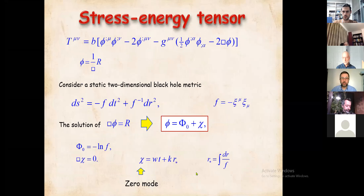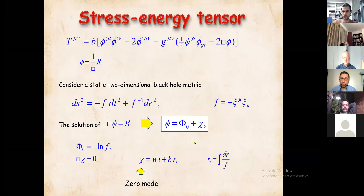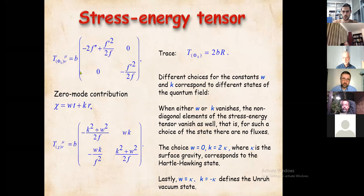The stress-energy tensor in the pure local theory looks like this, and for a static background with a Killing vector we can always use a particular representation for the metric. The solution for the auxiliary field φ is straightforward: φ₀ is just minus the logarithm of our function f. There is an extra contribution describing zero modes, which are also trivially solvable and look like a linear combination with two arbitrary coefficients w and k, where r is the tortoise coordinate.